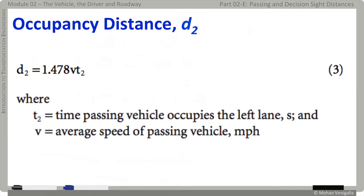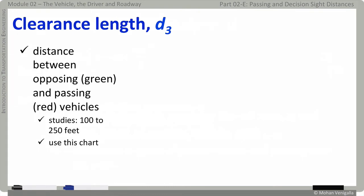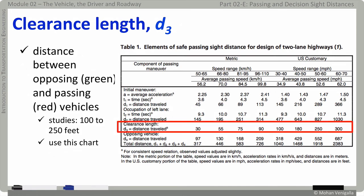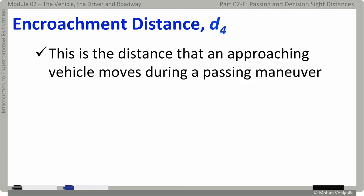D2 is the distance for which the passing vehicle has occupied the wrong side of the road. The clearance length D3 is the distance between the opposing vehicle — the green one — and the passing vehicle — the red one. Studies have shown these values range from 100 to 250 feet, and a table from the Green Book is used to look up appropriate values for D3. The encroachment distance D4 is the distance that the approaching vehicle moves during the passing maneuver, and it is given by two-thirds of D2, the occupancy distance.